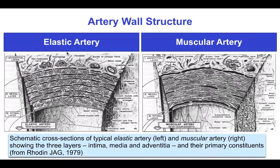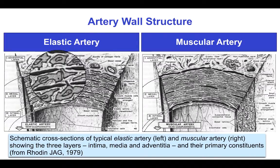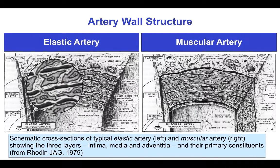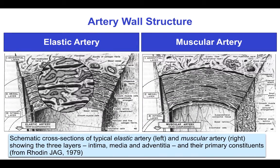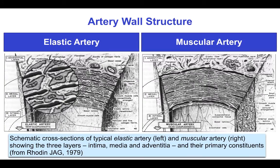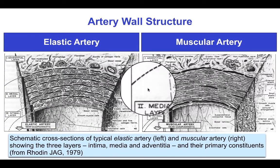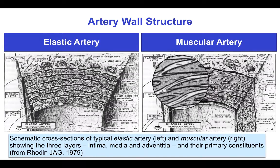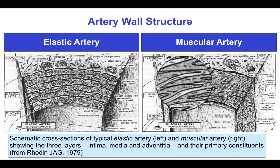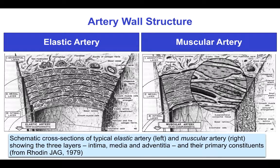The largest arteries, like the aorta, are called elastic arteries. Their media contain elastic laminae, seen here, with gaps or fenestration. While the smaller muscular arteries, such as the resistance vessels, which have the greatest pressure drop during the circulation, have a greater fraction of the wall thickness occupied by smooth muscle and a smaller fraction of elastic tissue.